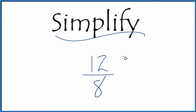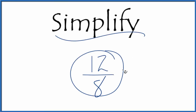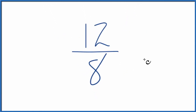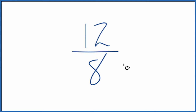If you're asked to simplify the fraction 12 over 8, here's how you do it. What we want to do is find another fraction that's equivalent to 12 over 8 — it has the same value as 12 divided by 8, just reduced or simplified down to lowest terms. So we're looking for a common factor, something that goes into both 12 and 8.